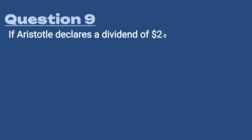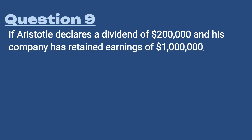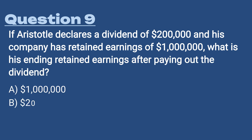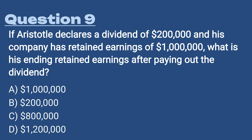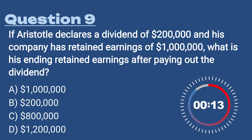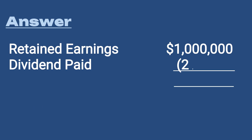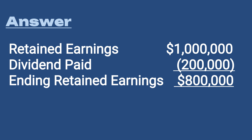Question 9: Aristotle declares a dividend of $200,000 and his company has retained earnings of $1 million. What is his ending retained earnings after paying out the dividend? A) $1 million, B) $200,000, C) $800,000, D) $1.2 million. The answer is C, $800,000. Taking retained earnings of $1 million and subtracting the dividend paid of $200,000, the ending retained earnings balance is $800,000.